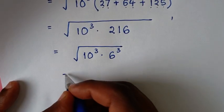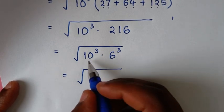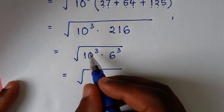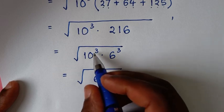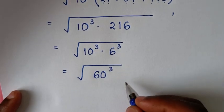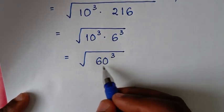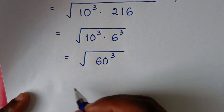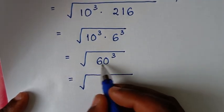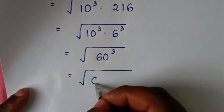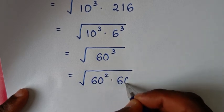Then it will be equal to the square root. Since the power of 3 is common, we take 10 times 6, which is 60, so it will be 60³. Because we have a square root, we rewrite 60³ as 60² times 60.